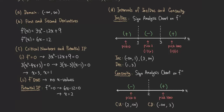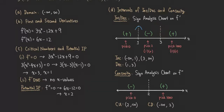Now we can find the local max, local min, and actual inflection points. Using the first derivative test, the function is increasing before x equals 1 and decreasing after, so there is a local max at x equals 1. Before x equals 3 it's decreasing, and after x equals 3 it's increasing, so there is a local min at x equals 3.